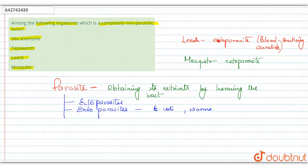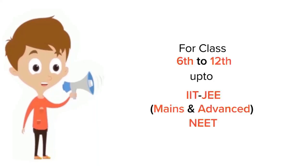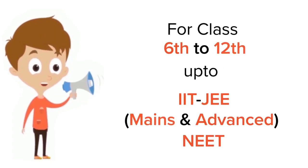So the correct option is option A, which is sea anemone. Sea anemone is not known to be a parasite. They belong to the phylum Cnidaria and do not act in a parasitic form.